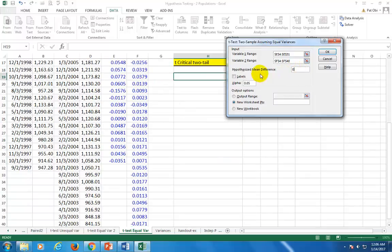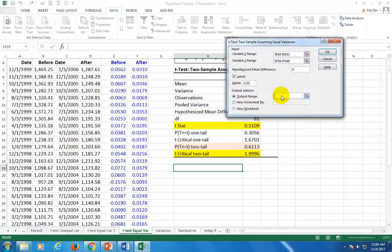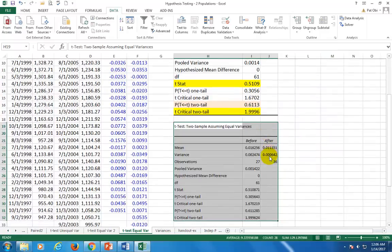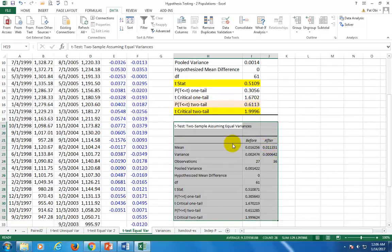Hypothesized mean difference again is zero. Check labels here. Click right here, and while it's blinking, choose a spot on the spreadsheet such as here, and then OK. That's what you get. You can see I did that a little earlier.